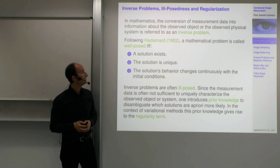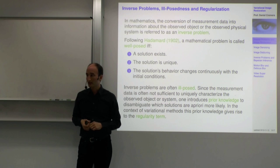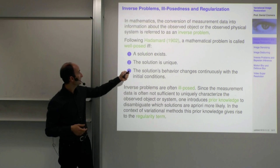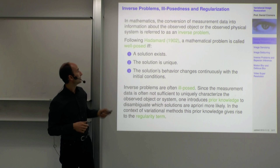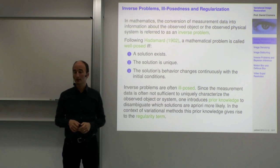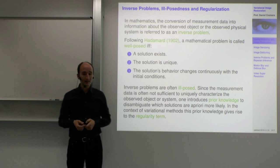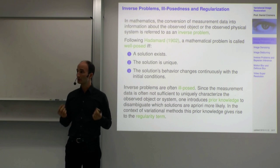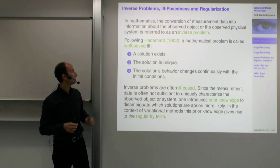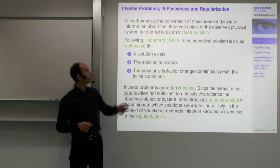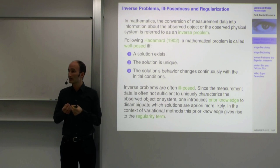There is a very important definition of mathematical problems that goes back to Hadamard in 1902. He said a mathematical problem is well-posed if and only if it fulfills these three conditions. First, a solution should exist. Second, the solution should be unique — there should not be multiple solutions. Third, the solution's behavior should change continuously with the initial conditions, or in this setting, with the data: if we change the observations a little bit, then the solution should change only a little.